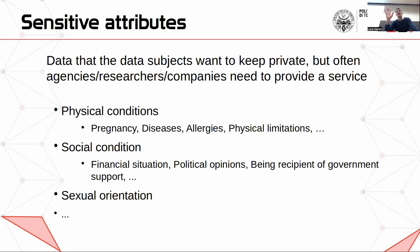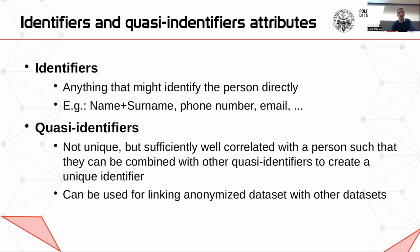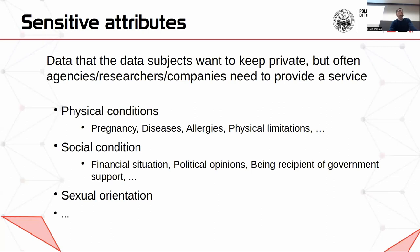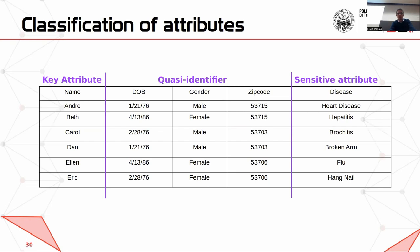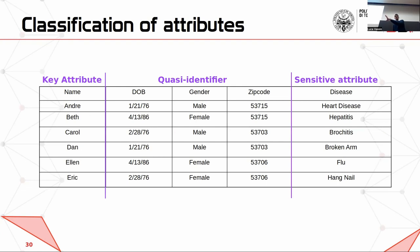Let's make an example on a table similar to the Massachusetts example. You have identifiers like name. Quasi-identifiers are something like date of birth, gender, and zip code. And sensitive attributes can be the disease. I'm going to use this example to show k-anonymity.